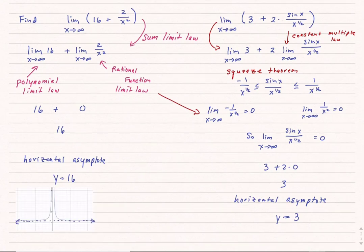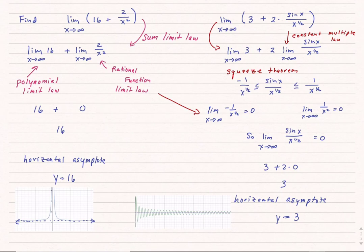Looking at the two examples, both have a single horizontal asymptote. The first example has a horizontal asymptote of y equals 16, and the second has a horizontal asymptote of y equals 3. The graph of the second example is notable because the function actually crosses the horizontal asymptote, but as x goes towards infinity, it settles out to y equals 3.